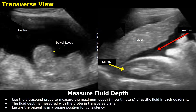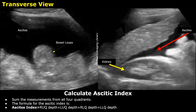The maximum depth of fluid seen on ultrasound is measured in either millimeters or centimeters. The deepest measurement is taken in each quadrant with the probe in the transverse plane. Ensure the patient is in the supine position while scanning. To calculate the Ascites index, we will add all four measurements: right upper quadrant depth plus left upper quadrant depth plus right lower quadrant depth plus left lower quadrant depth. This is the formula for calculating the Ascites index.